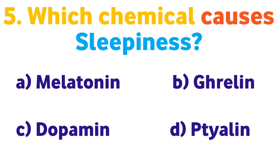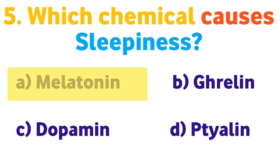Question number five: Which chemical causes sleepiness? Option A: Melatonin, B: Ghrelin, C: Dopamine, D: Tyline. Correct answer is A: Melatonin.